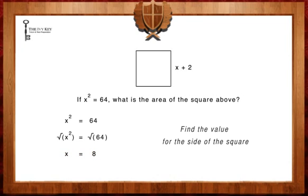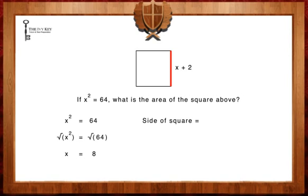Next, we must find the value for the side of the square. As you can see in our diagram, one side of the square is represented as x plus 2. Since x equals 8, the side of the square is equal to 8 plus 2, or 10.